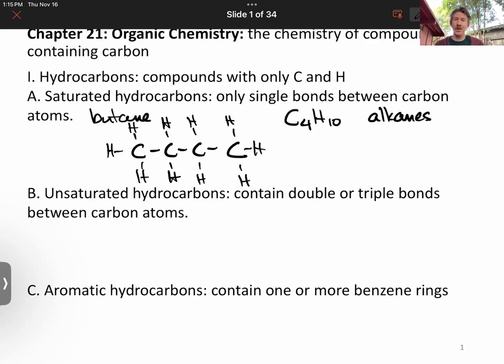Pentane would be five carbons. A-N-E ending means all connected with single bonds. The alkanes in general have the formula CnH2n+2. So if you see a formula that follows that pattern, it is an alkane.